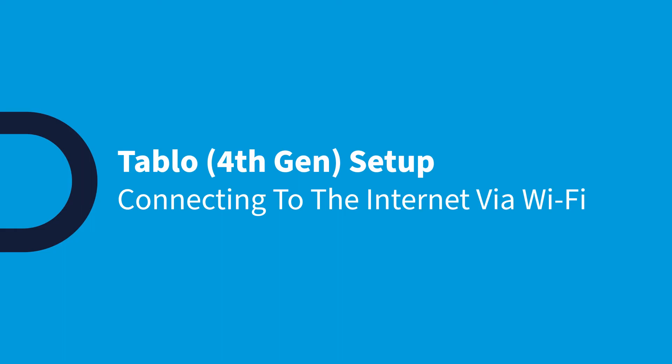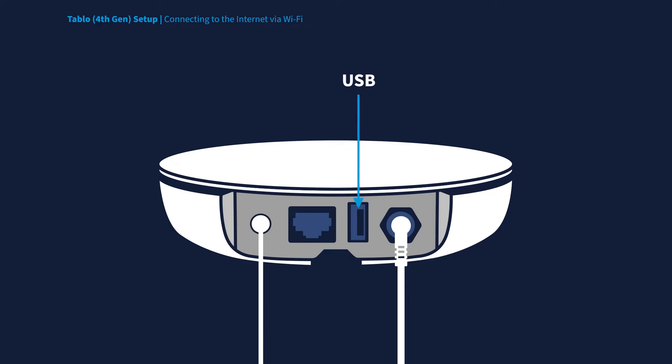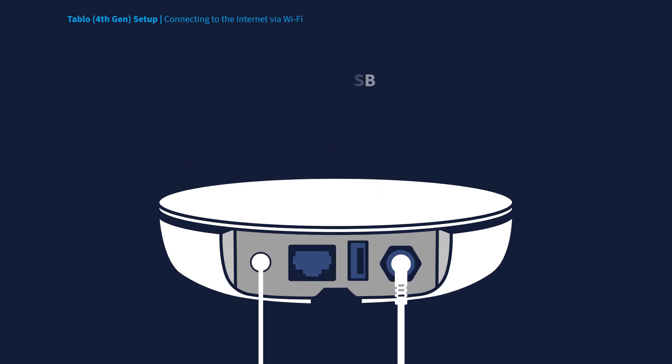Tableau features dual-band Wi-Fi connectivity, so you can place your antenna and Tableau device in the best possible location for over-the-air TV signal reception. To connect your Tableau to your home network wirelessly, first you must make sure that there is nothing plugged into the Ethernet port, as well as the USB port on your Tableau device.